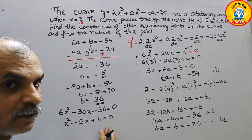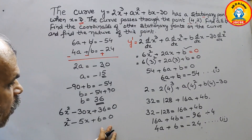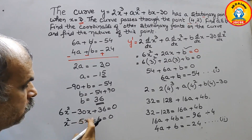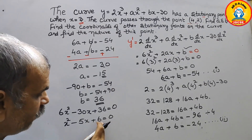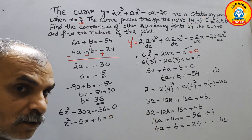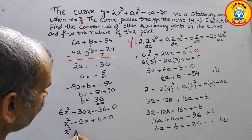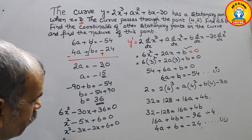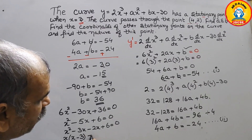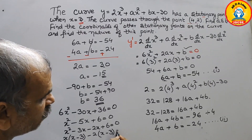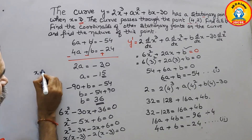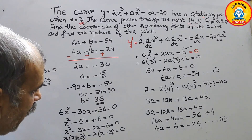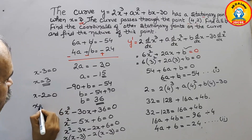Factorising x² minus 5x plus 6: we need two numbers that multiply to 6 and add to minus 5, which are minus 3 and minus 2. So: x² minus 3x minus 2x plus 6 equals 0, giving x(x minus 3) minus 2(x minus 3) equals 0, so (x minus 2)(x minus 3) equals 0. Therefore x equals 3 (already known) or x equals 2.